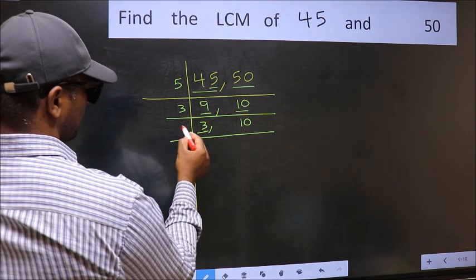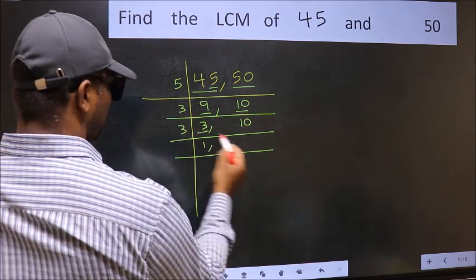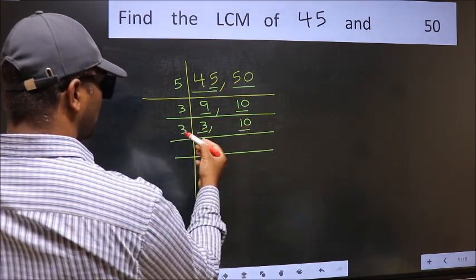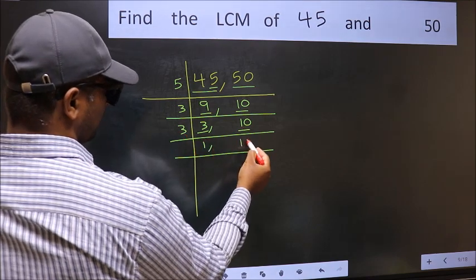Now, here we have 3. 3 is a prime number, so 3 once is 3. The other number, 10, is not divisible by 3, so you write it down as it is.